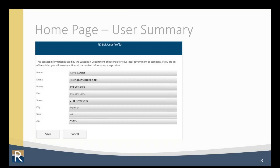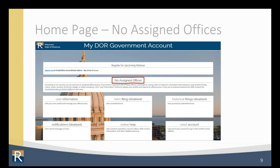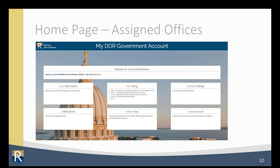If this is the first time you log into MyDORGov, you'll see a user summary window. Enter information to create your user profile and save. The email address you enter in the user summary section will be the email address in your user profile, which is linked to MyDORGov. You are now on the MyDOR Government homepage showing a 'No Assigned Offices' message, which contains instructions on how to get started. Follow the instructions to request an office or to request access.